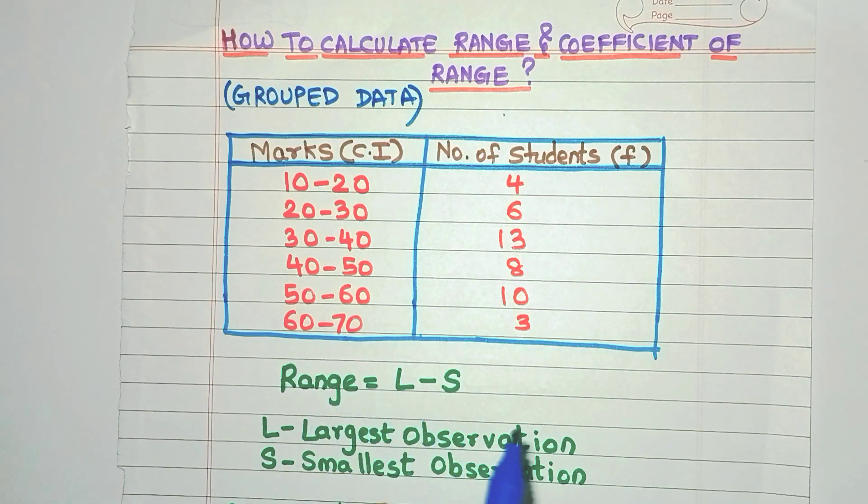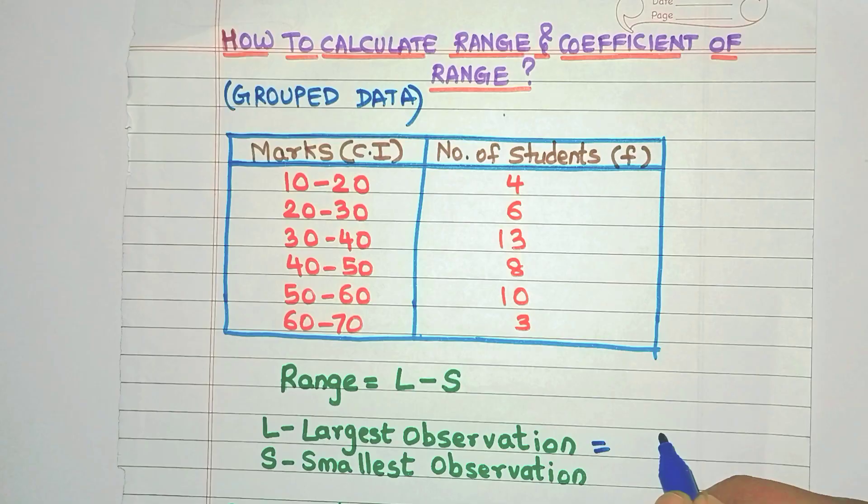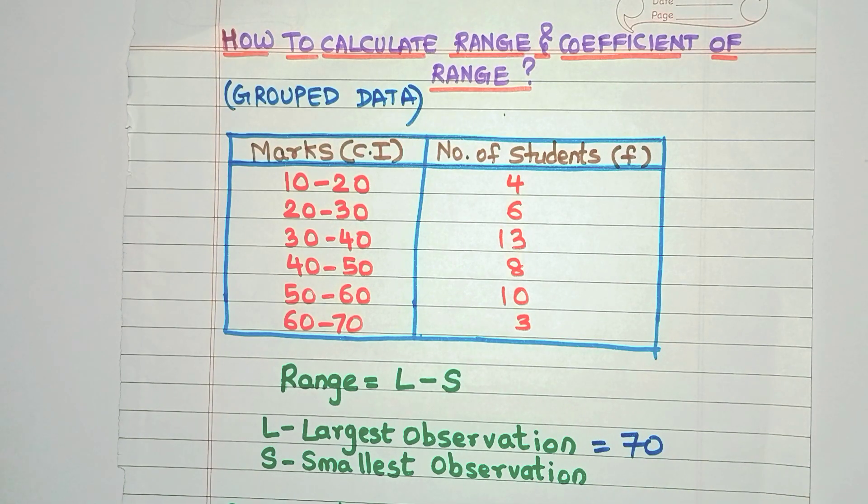Now, is there any data which will be more than 70 over here? Definitely not. It will be all less than or equal to 70. So can we say that 70 is the largest observation? Yes, we can definitely say. So we will write L or the largest observation as 70.